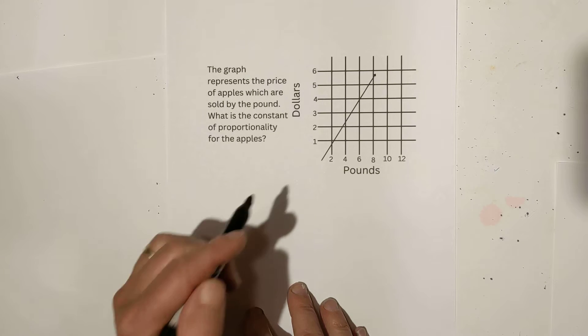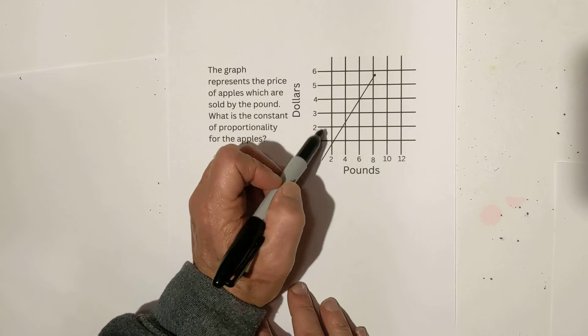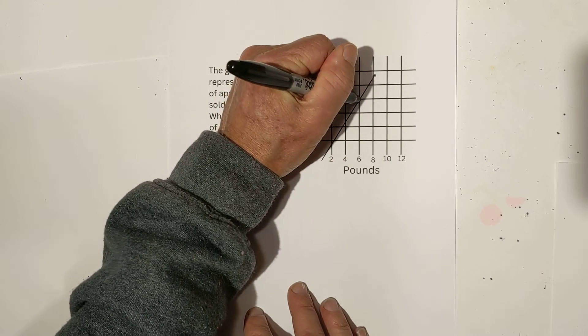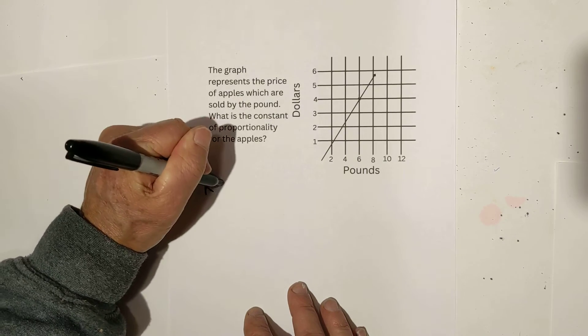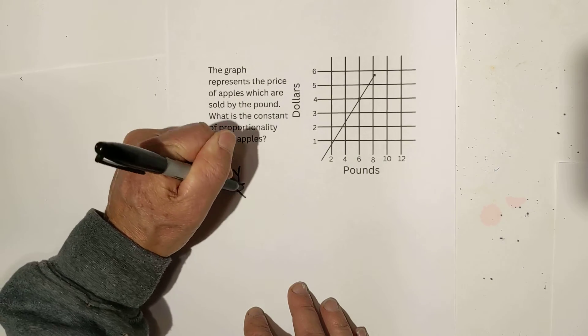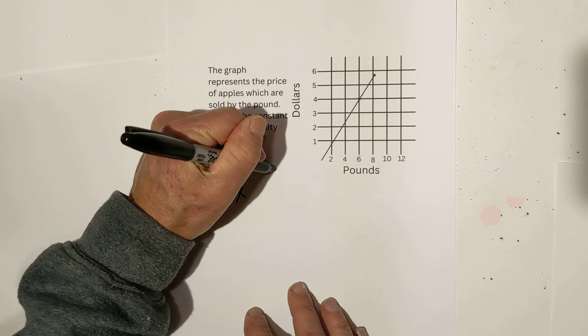Again, I'm going to search for the point where they intercept exactly, and we have a 4 and a 6. So, k is equal to y over x. y is 4 and x is 6.